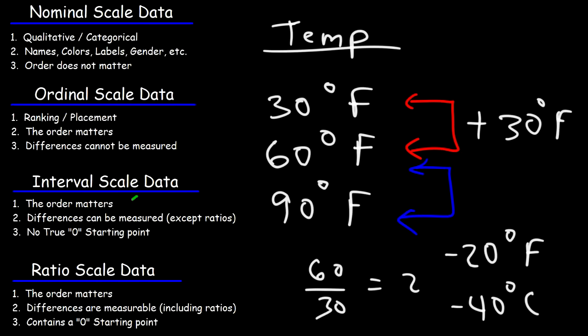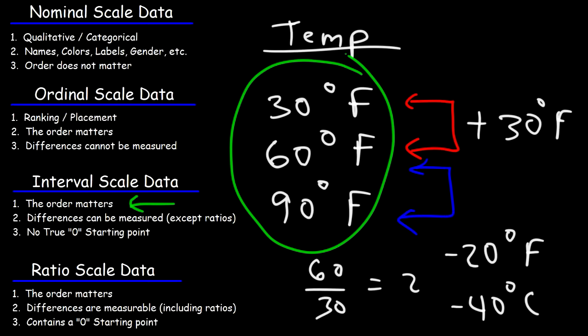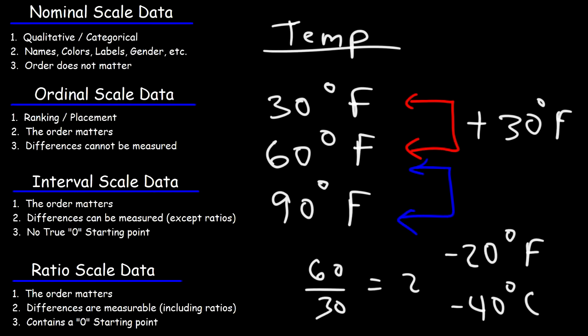Going back to the order: it matters for interval scale data because you can place temperature values in order — 30 is lower than 60, and 60 is lower than 90. So you can arrange them in increasing order, and in that sense the order is meaningful.